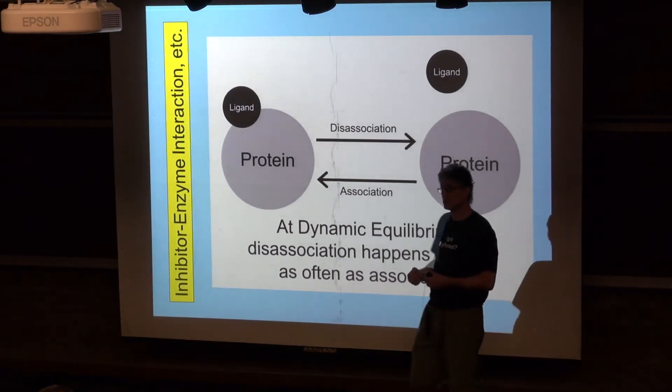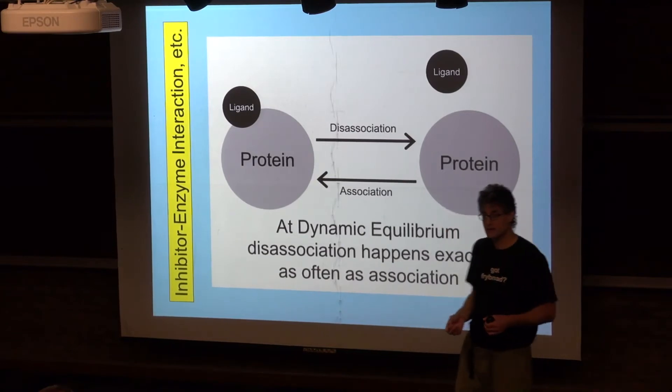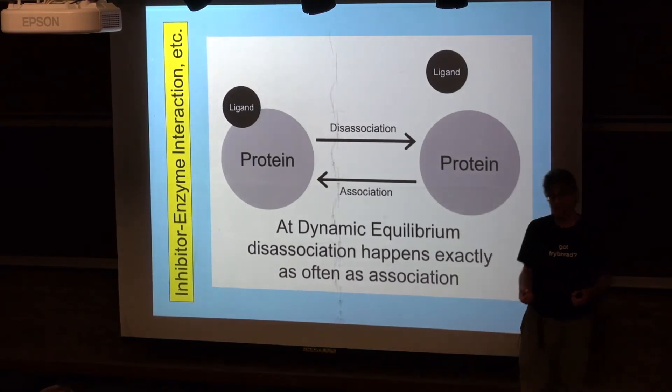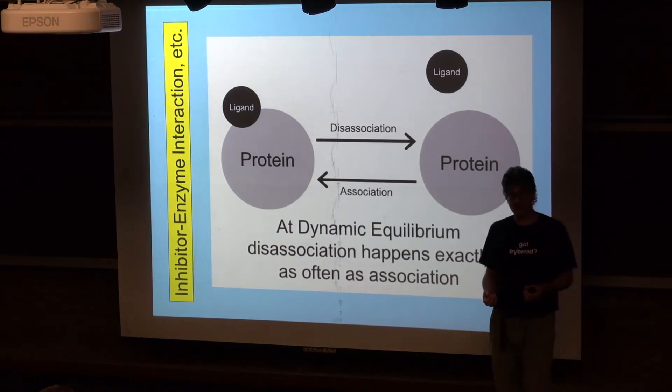These small molecules that can bind to larger molecules are called ligands. The inhibitor molecules involved in allosteric inhibition are examples of ligands.